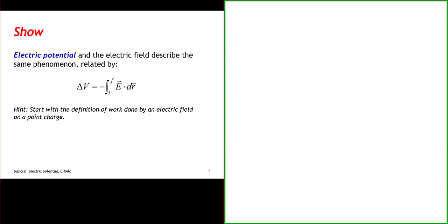Our goal is to show the connection between electric potential and the electric field. The definition of the electric potential says that the change in electric potential is equal to the change in potential energy per unit charge. Remember, the change in potential energy is equal to minus the work done by a conservative force. So in this situation, the change in electric potential is equal to minus the work done per unit charge.